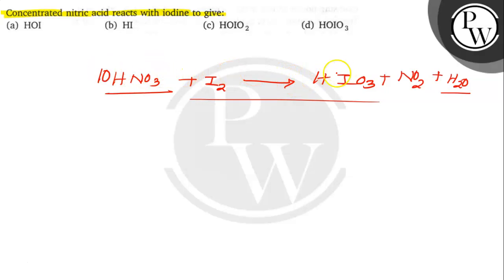This will be 10 molecules and this will be 2 molecules. And NO2, having 10 molecules of NO2, then there will be 4 molecules of water produced here. So the question is asking about concentrated nitric acid reacting with iodine to give, so when it reacts with iodine it will give this compound.